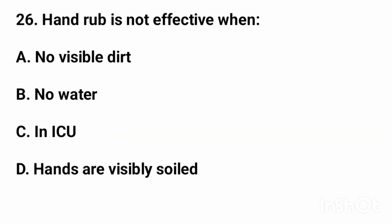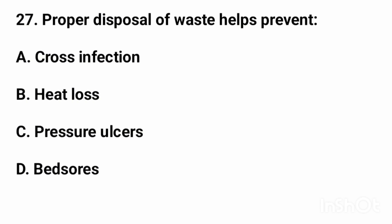Question number 26: Hand rub is not effective when? The right answer is option D: hands are visibly soiled. Question number 27: Proper disposal of waste helps prevent? The right answer is option A: cross infection.